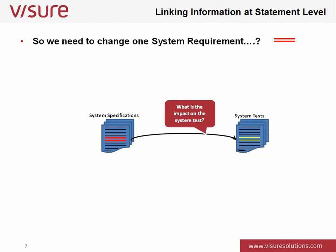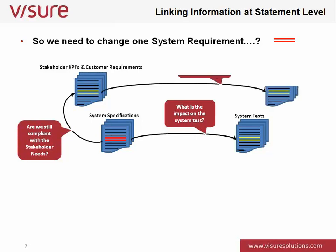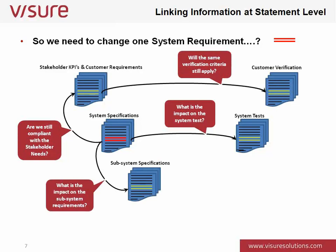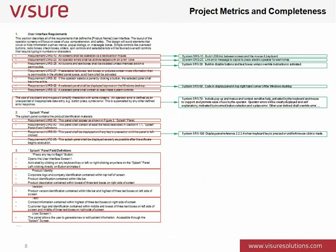It's this same traceability we use to produce our project specifications and project metrics information. If a system specification requirement changes, we ask: are we still compliant with what the stakeholder originally asked for? We have an explicit link from the system specification to the KPI requirement or stakeholder requirement that was driving the system requirement in the first place. If the subsystem specification is impacted, it could also have an impact on subsystem tests. Understanding the impact of that change — what is touched — allows us to make more informed decisions.